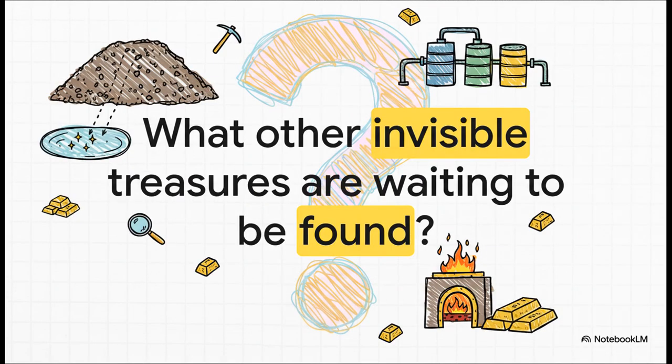So there you have it. What started as less than a gram of invisible metal, scattered throughout a ton of rock, ends up as a bar of nearly pure gold. It's just an amazing testament to how modern chemistry can unlock the treasures of an ancient metal. It really makes you wonder, what other invisible resources are out there, hiding in plain sight, just waiting for the right process to unlock them?